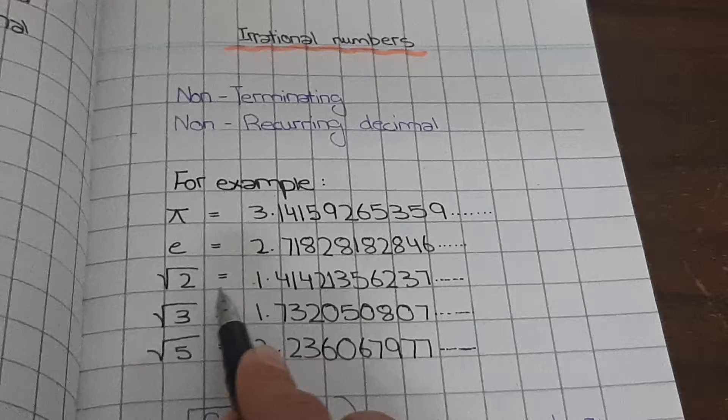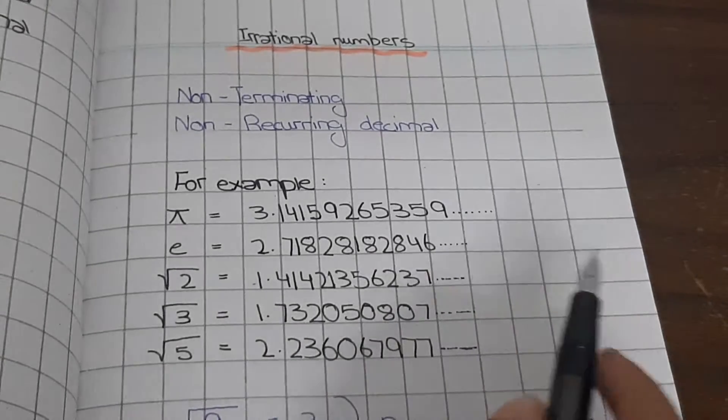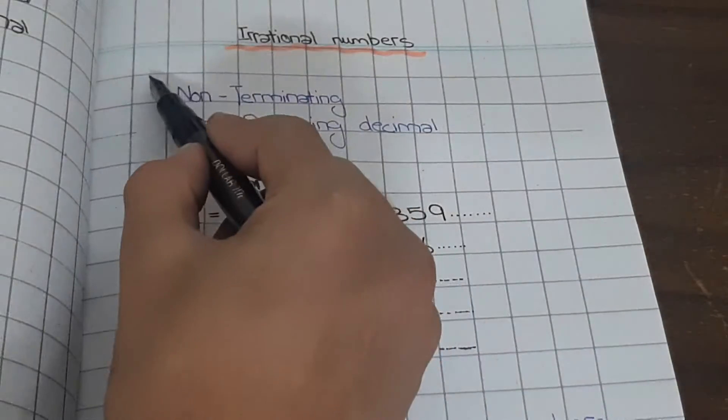Square root of 2. It is 1.41421356237. This is also an irrational number because of these two points.